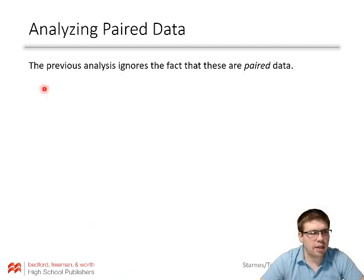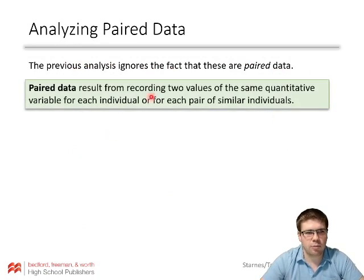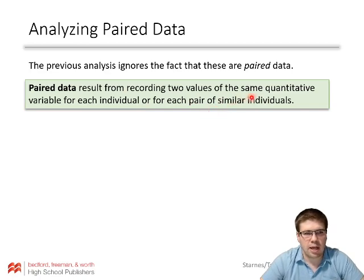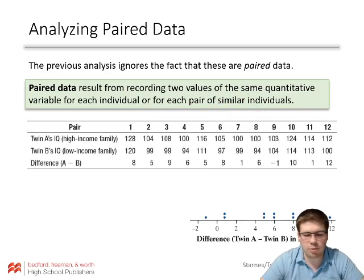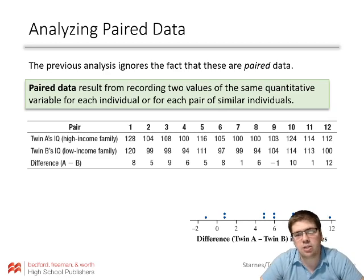The previous analysis ignores the fact that these are paired data. Paired data result from recording two values of the same quantitative variable for each individual, or for each pair of similar individuals. In this case, the pairs are the twins. We've also done matched-pairs designs before where we pair individuals who are similar in some other way, or where the same person completes something two different ways.